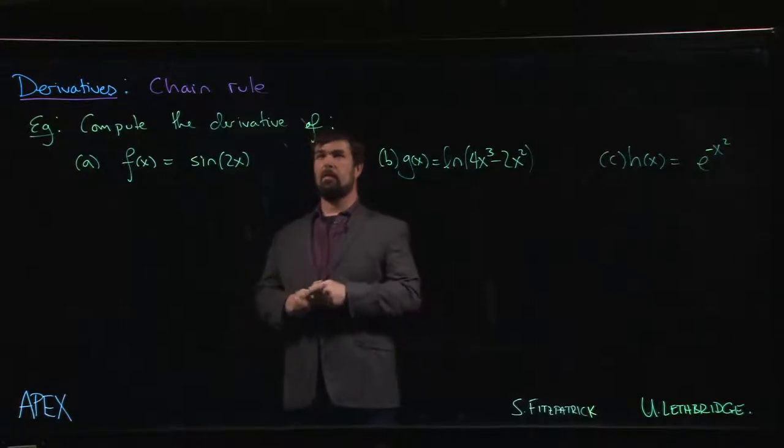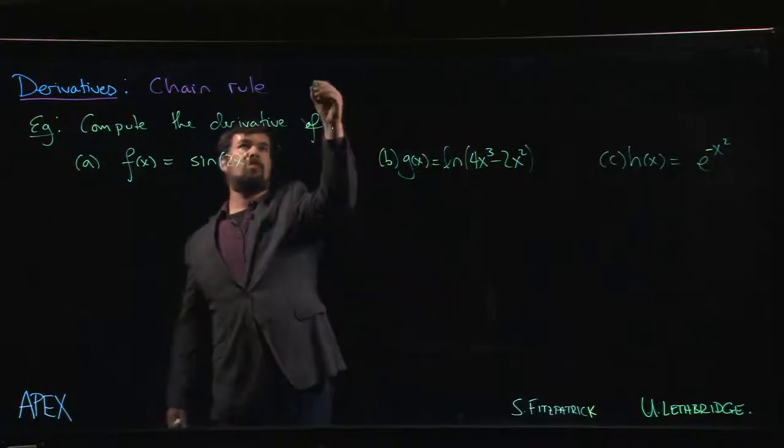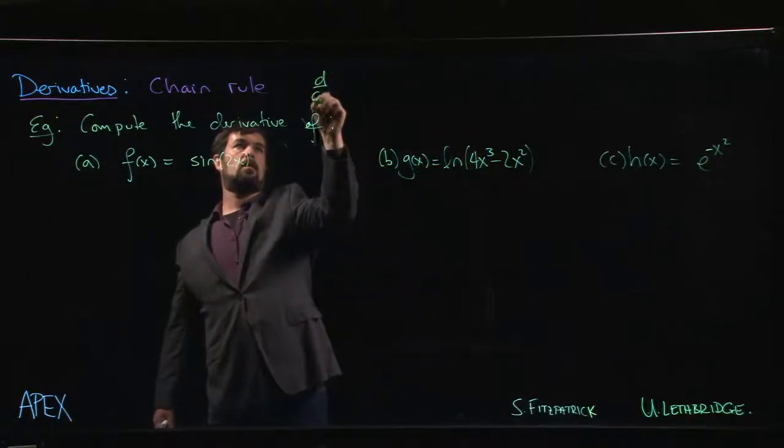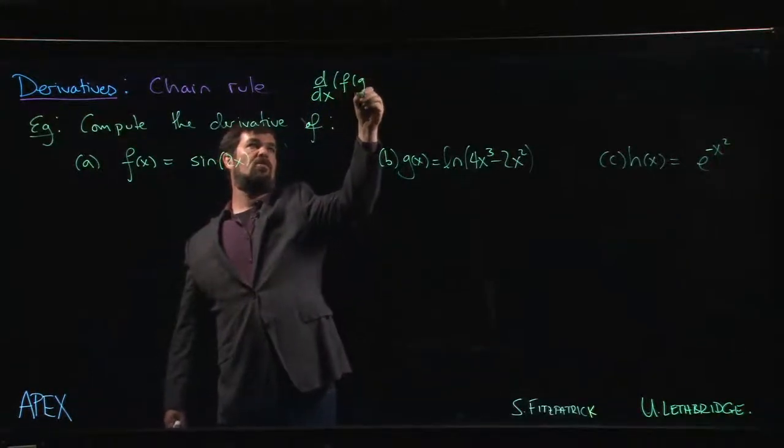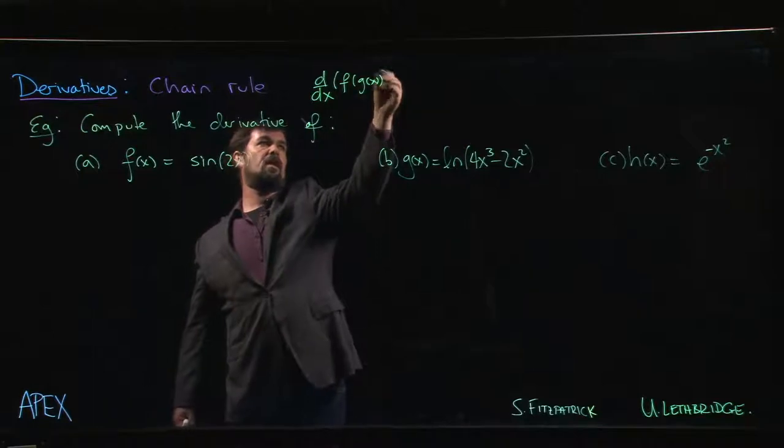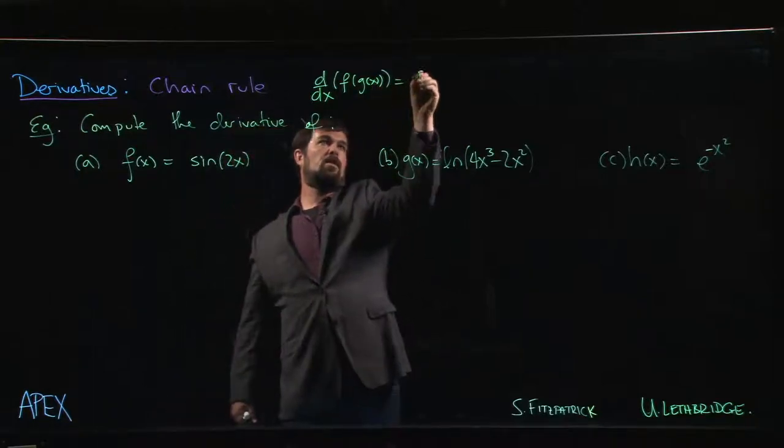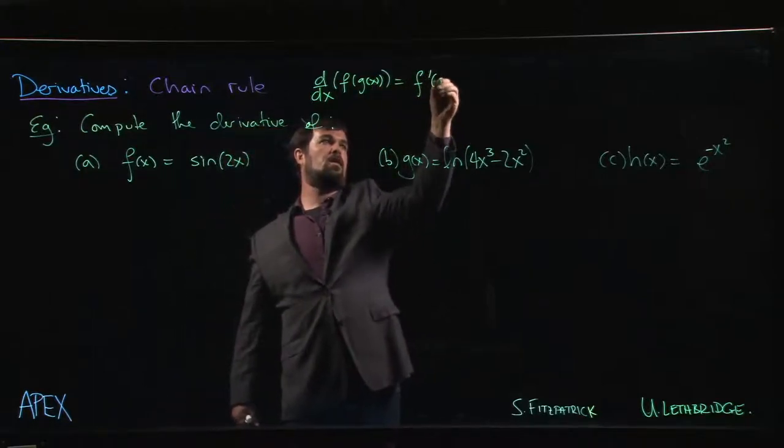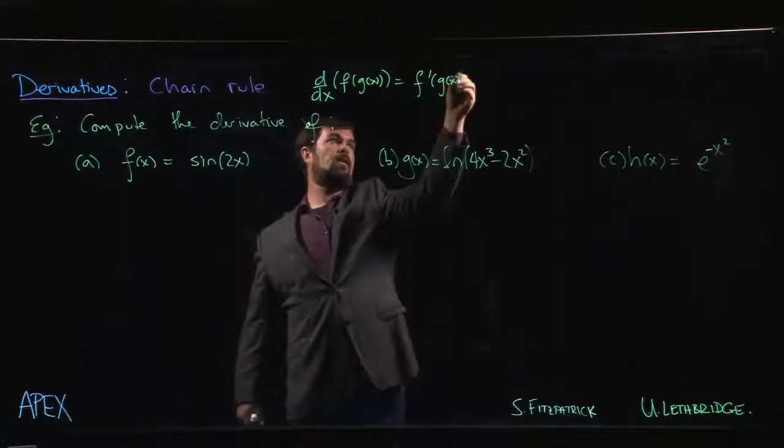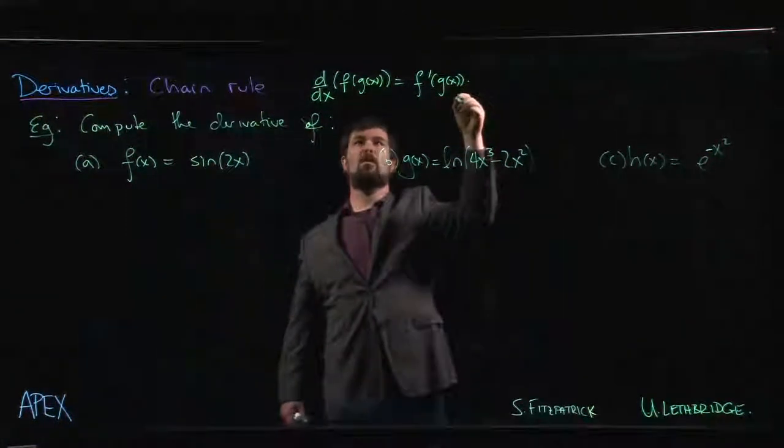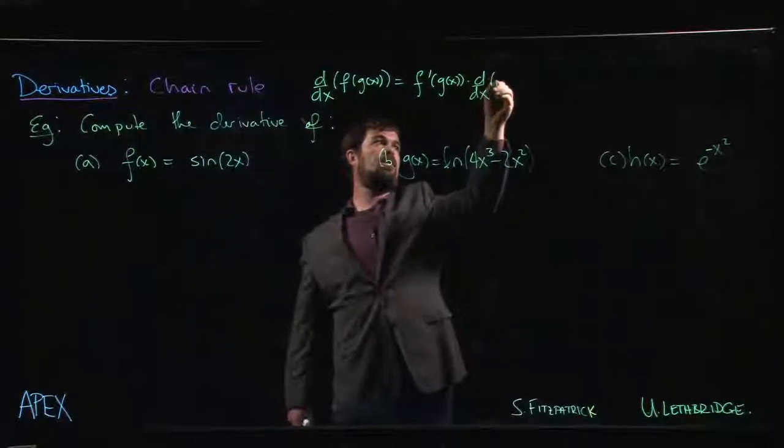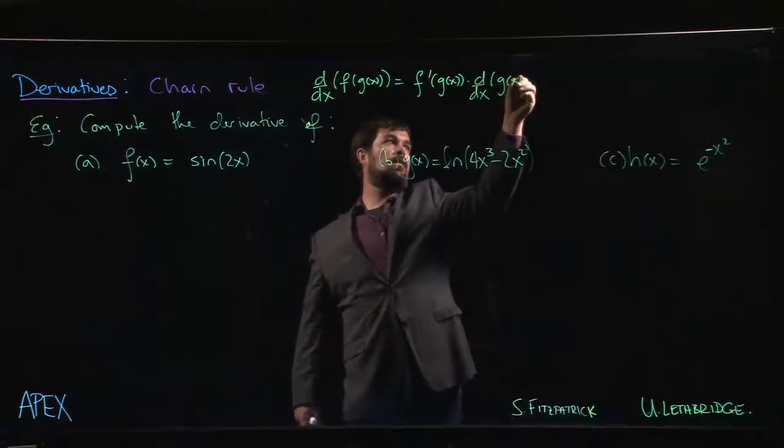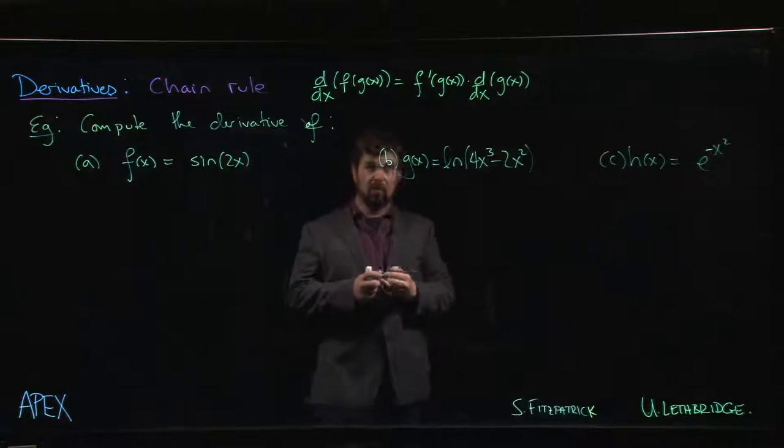So we've established the chain rule, and just as a reminder, the chain rule says that the derivative of a composition, say f of g of x, is given by the derivative of the outside, evaluated at the inside, times the derivative of the inside.